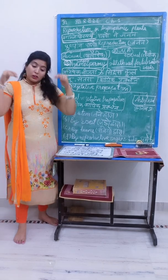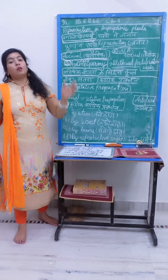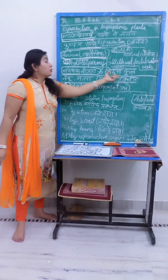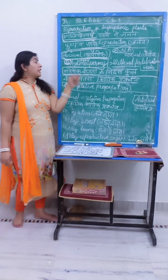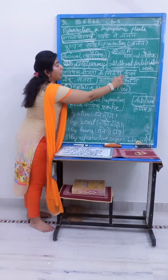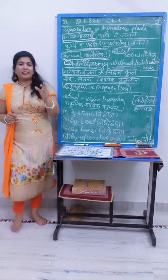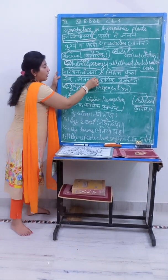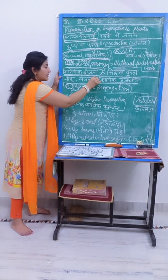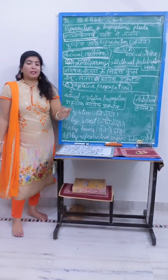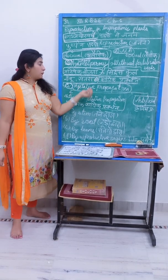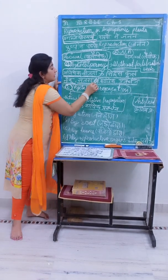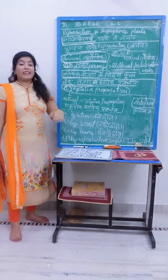Agamospermy, also called apomixis or fertilization-free seed development, occurs in the citrus family. Those who travel for months can have vitamin C deficiency, so vitamin C from citrus is important. The citrus family — like lemon, orange, santra — is where agamospermy occurs. When you open a lemon seed, you will find more than one embryo inside.